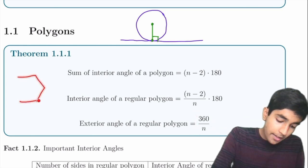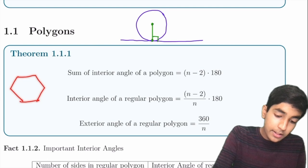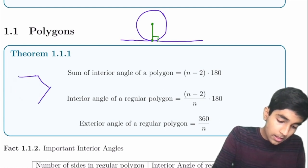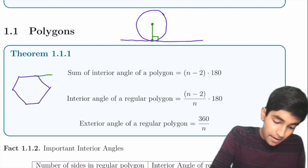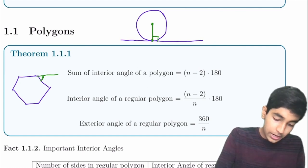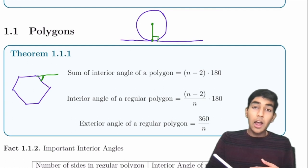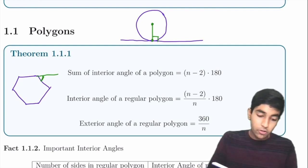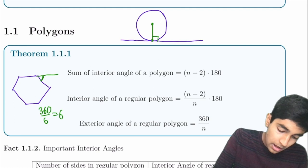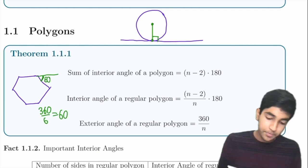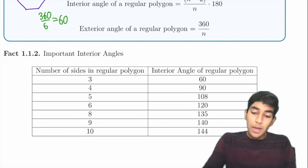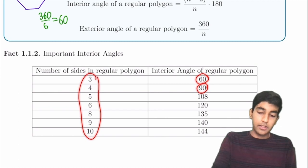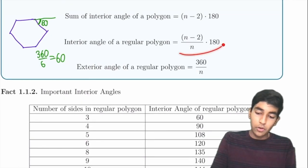In a hexagon with six sides, the exterior angle is 360 divided by 6, or 60. So this angle is 60, and this is true for any n. There's a table you can review to help memorize the interior angles of different regular polygons with different numbers of sides, but all of these are derived from the formula.